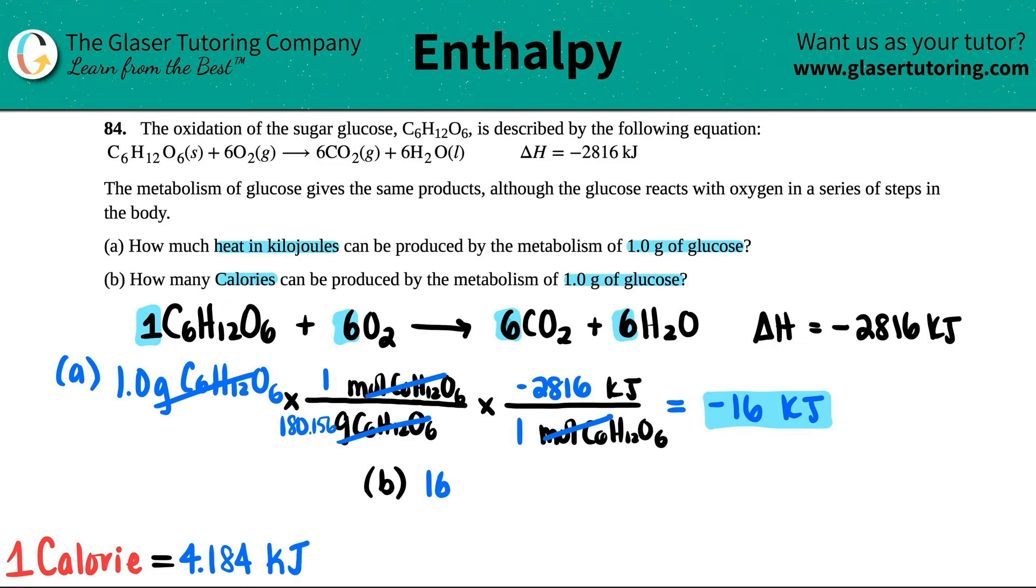I'm going to put it as 16, because when we think in terms of calories, we don't think in terms of negative calories. So maybe I'll just say, you know, I'll say 16 kilojoules produced here. It's going to be produced and released.